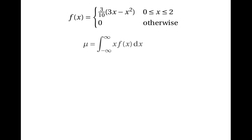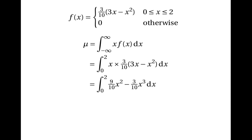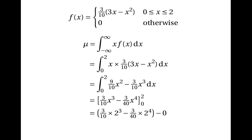To find the mean we integrate x·f(x) over all possible values of x, which is the integral from 0 to 2 of x·(3/10)(3x − x²). We integrate between 0 and 2 because f(x) is 0 everywhere else. Multiplying out the brackets gives the integral of (9/10)x² − (3/10)x³, which evaluates to (3/10)x³ − (3/40)x⁴ between 0 and 2. Substituting gives (3/10)(8) − (3/40)(16) = 1 and 1/5, so the mean is 6/5.